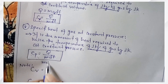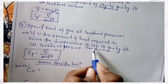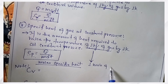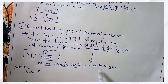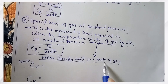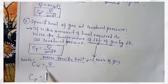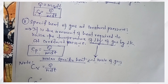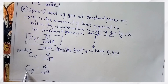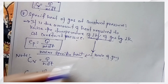Molar specific heat: instead of 1 kg of gas, we consider 1 mole of gas. Capital Cv equals Q divided by n DT at constant volume; Capital Cp equals Q divided by n DT at constant pressure — where n is the number of moles.